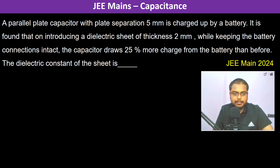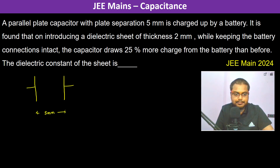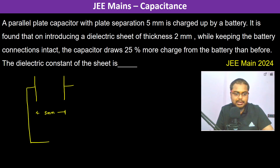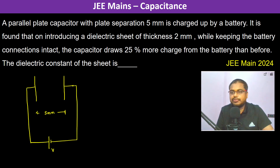A parallel plate capacitor with a separation of five millimeters is charged up by a battery connected to it. There is a potential difference V across the capacitor, and it is found that on introducing a dielectric sheet, certain changes occur.